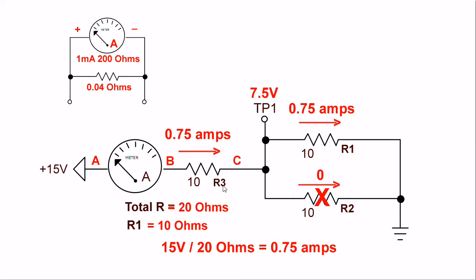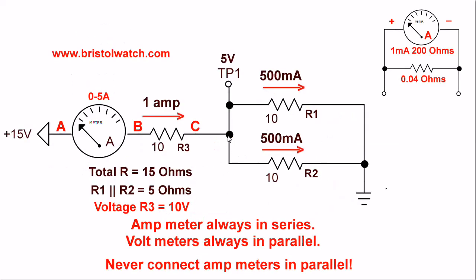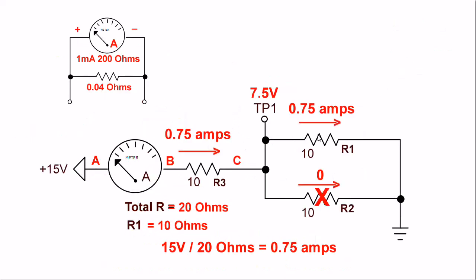The same current through R3 equals the current through R1. If we go back to the previous frame, we don't have the effect where 1 amp divided between the two resistors. All of the current still goes through R3, but it also goes through R1.